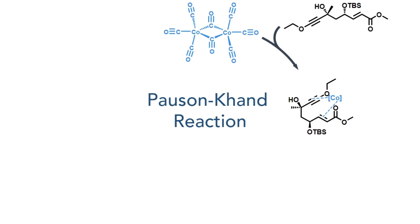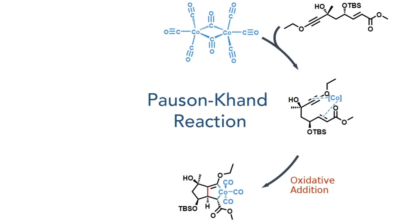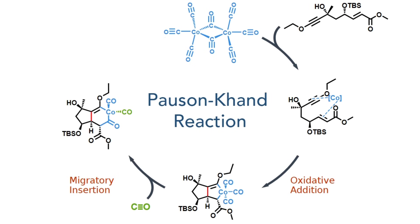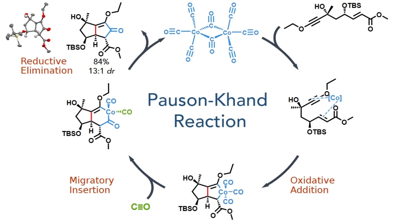With the acetylide in place, they then carried out a Pauson-Khand reaction. Dicobalt octacarbonyl first coordinates to both the alkene and the alkyne. An oxidative addition then occurs, together with the formation of a carbon-carbon bond. Another equivalent of carbon monoxide then coordinates to the cobalt, driving a migratory insertion to form a carbon-carbon bond between the position coordinated to the cobalt and one of the carbon monoxide ligands already present in the molecule. A reductive elimination then occurs, regenerating the cobalt catalyst and forming the final carbon-carbon bond, generating the target bicycle with an 84% yield and a 13:1 dr.